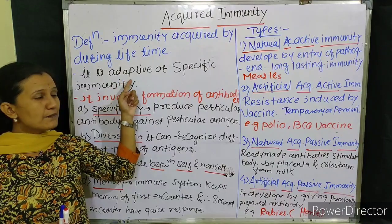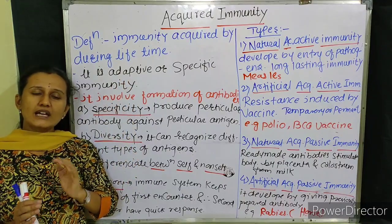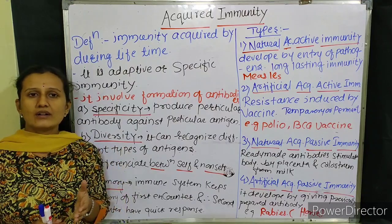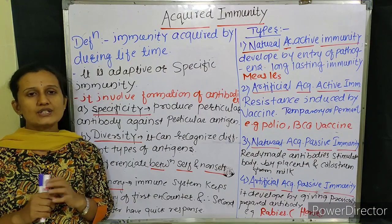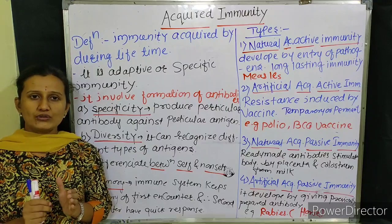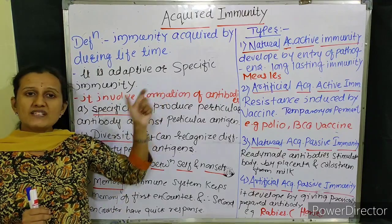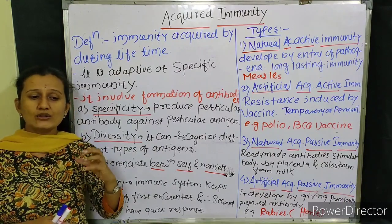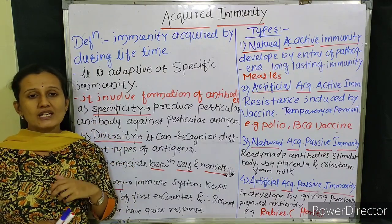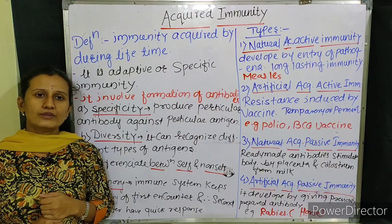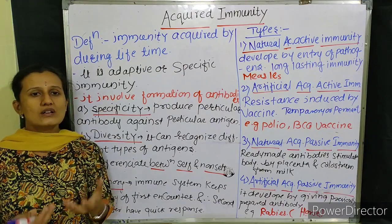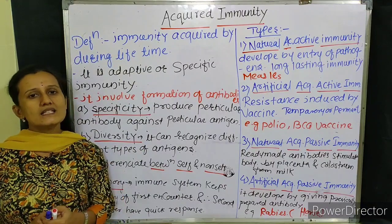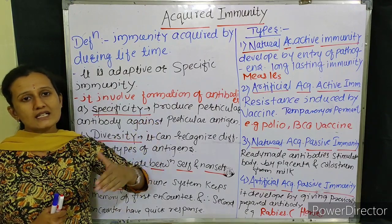Acquired immunity can adjust with the environment, the parasite, or the antigen that is attacking the organism. When, for example, Salmonella typhi — the bacteria that causes typhoid — attacks an organism, the organism's body learns how that bacteria attacks. Then the organism's body also learns how to fight with that antigen and how to stimulate the antibody against typhoid.